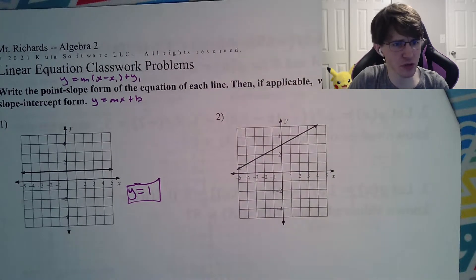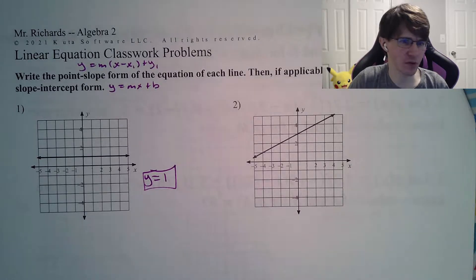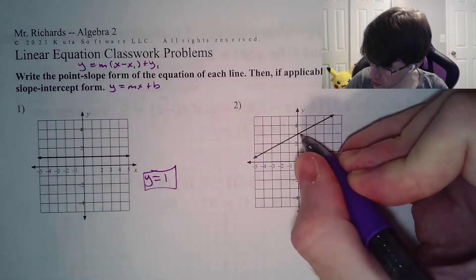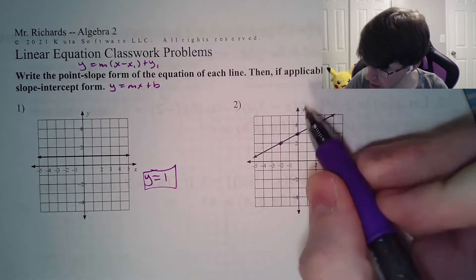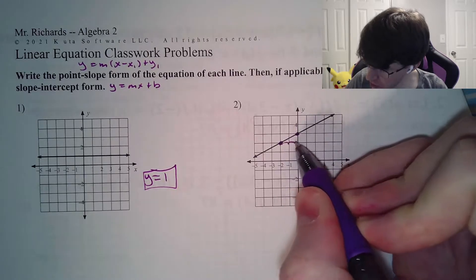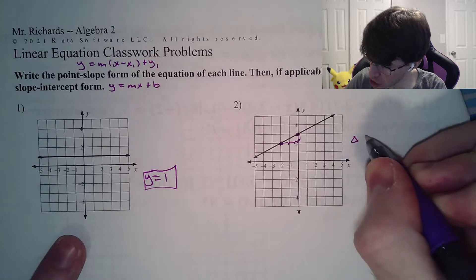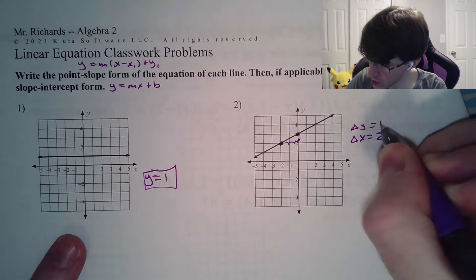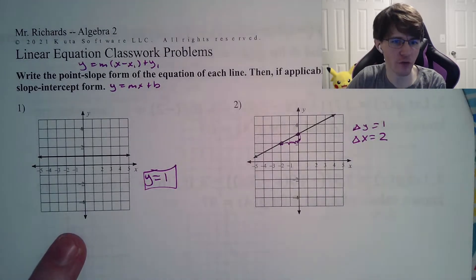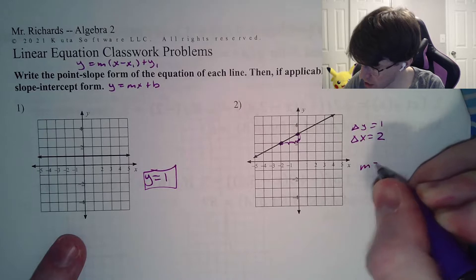Number two — I'm going to show this two different ways. In my opinion, you should be making this as easy as possible on yourself. If I simply started right here and ended up right here, then I have gone over 1, 2, and up 1. My change in x was 2, and my change in y was 1. Change of y over change of x is your slope. So we would just simply say our m is one half.